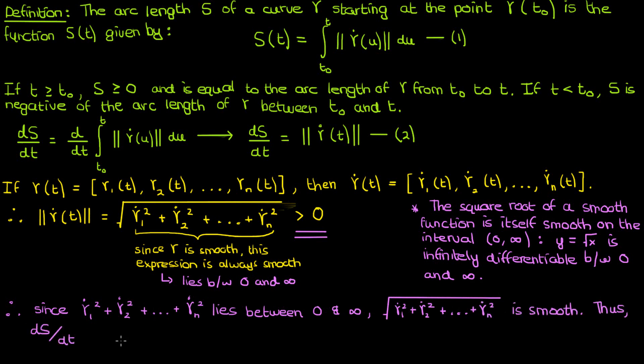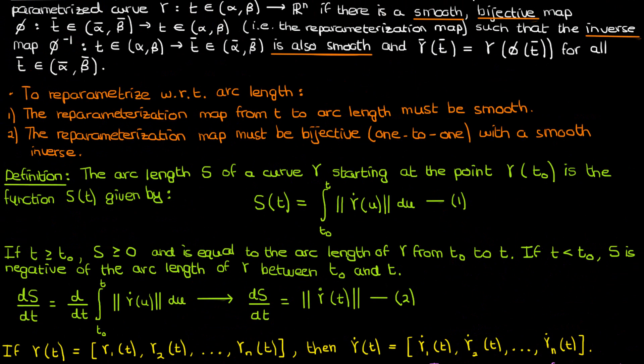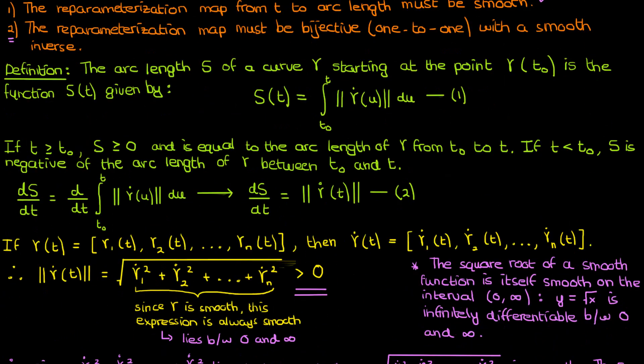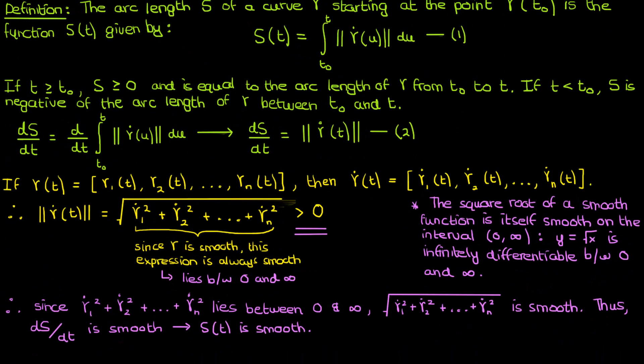By virtue of the transitive property of equality, the function ds/dt must also be smooth. And if ds/dt is smooth, then s(t) must therefore be smooth as a consequence. We've therefore satisfied the smooth condition for arc length to be considered a valuable reparametrization. All that's left is to satisfy the bijective condition.